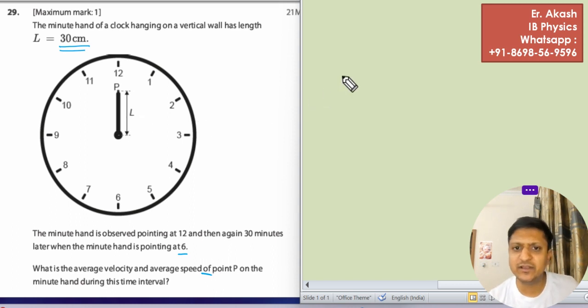So basically the question is of average speed and average velocity.